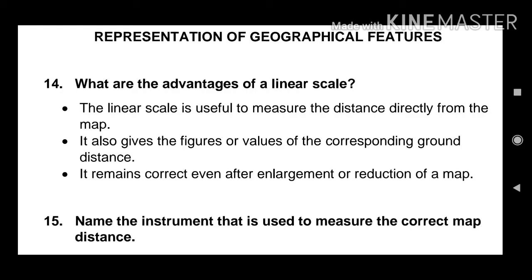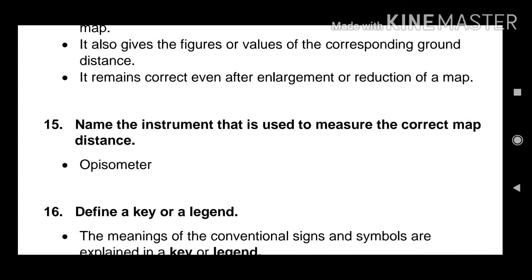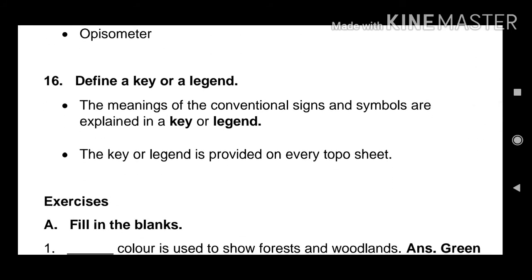Name the instrument that is used to measure the correct map distance. Opisometer. Then define a key or a legend. The meanings of the conventional signs and symbols are explained in a key or legend. The key or legend is provided on every topo sheet.